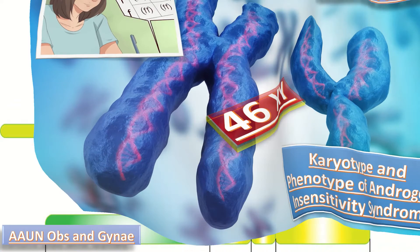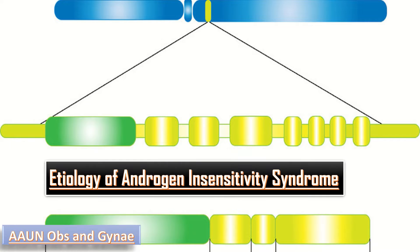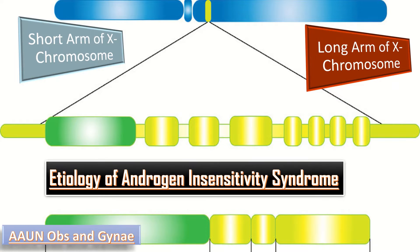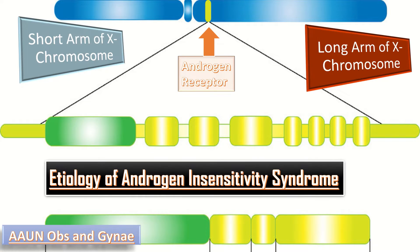What is the etiology of Androgen Insensitivity Syndrome? This condition occurs due to the complete inability of the body to respond to androgens. On the X chromosome we have two arms: the short arm and the long arm. The cause of AIS is a disruption of the androgen receptor gene on the long arm of the X chromosome, resulting in loss of androgen receptor.